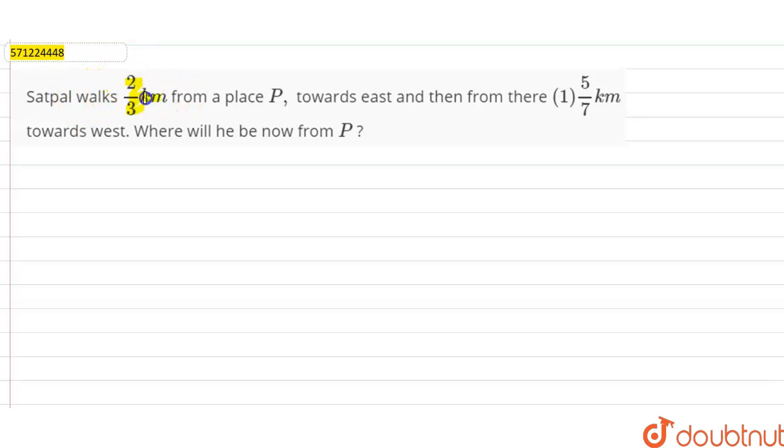...then from there 1 and 5/7 kilometer towards west. Where will he be now from P?